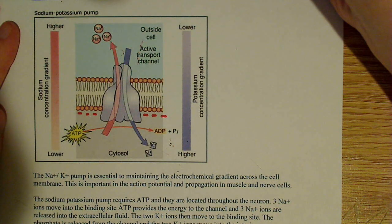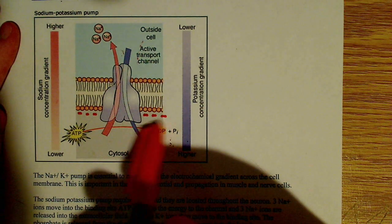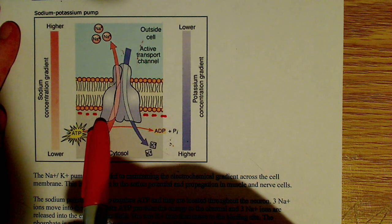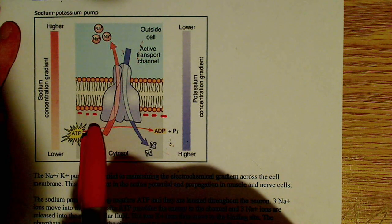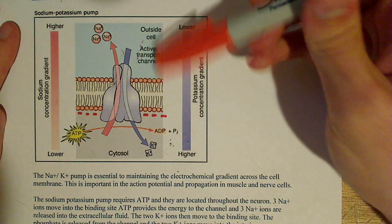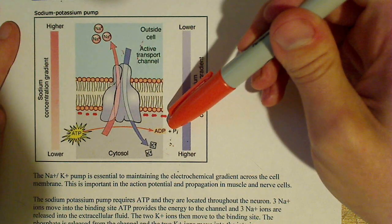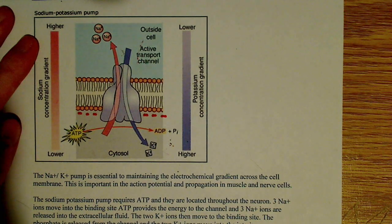And also, this inside membrane here, I have these little negative charges drawn in here, because inside the cell is negative relative to the outside of the cell. So there's more negative charge inside the cell relative to the outside of the cell.